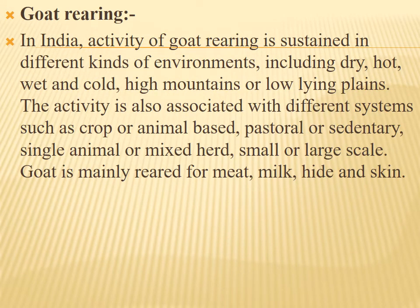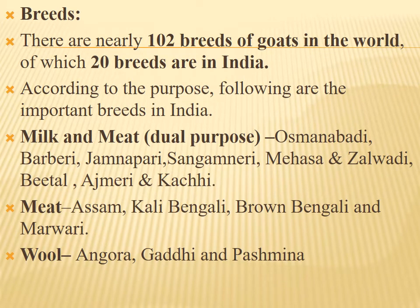Goat rearing in India is sustained in different kinds of environments including dry, hot, wet, and cold high mountains or low-lying plains. The activity is also associated with different systems such as crop- or animal-based pastoral and sedentary, single animal or mixed herd, and small or large scale. Goats are mainly reared for meat, milk, hide, and skin. There are nearly 102 breeds of goats in the world, of which 20 breeds are found in India.